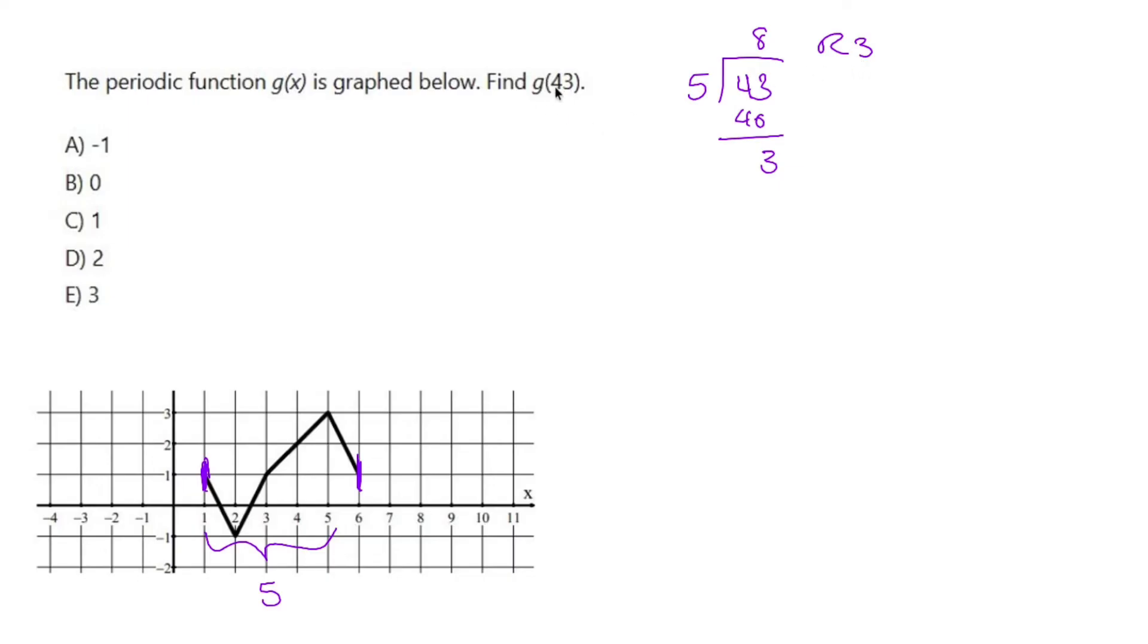So g(43) and g(3) are going to give us the same exact location. And g(3) gives us a point of 1. So g(43) is also going to be 1.